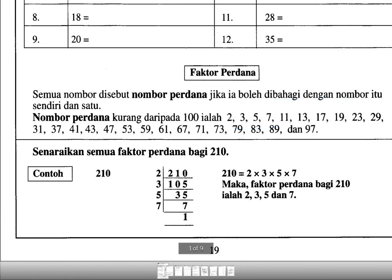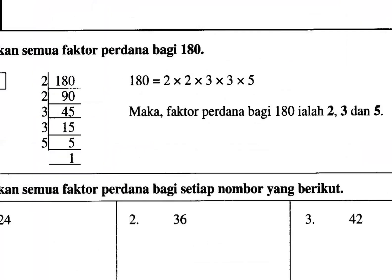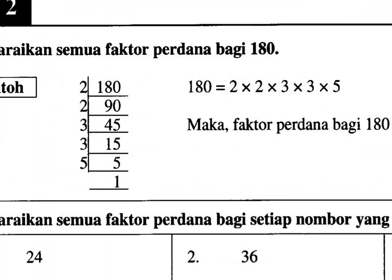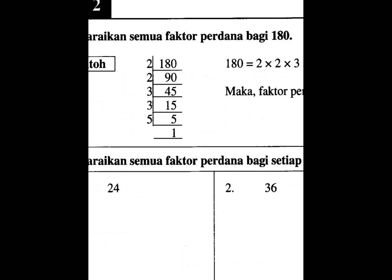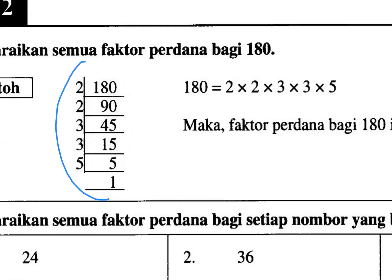For example, senaraikan faktor perdana bagi seratus lapan puluh — 180. Susah kan nak cari satu per satu? So what we're going to do is kita akan senaraikan semua faktor perdana tersebut using this technique — kita panggil bahagi terbalik.